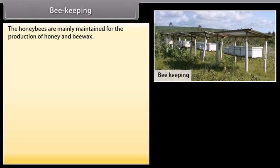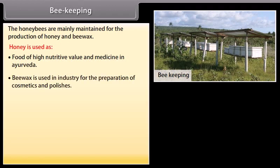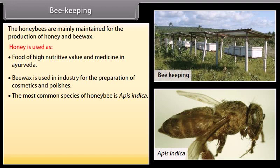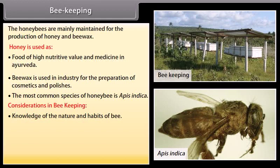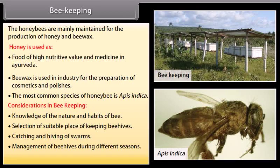Beekeeping: honeybees are mainly maintained for the production of honey and beeswax. Honey is used as a food of high nutritive value and medicine in Ayurveda. Beeswax is used in industry for the preparation of cosmetics and polishes. The most common species of honey bee is Apis indica. Considerations in beekeeping include: knowledge of the nature and habits of bees, selection of a suitable place for keeping beehives, catching and hiving of swarms, management of beehives during different seasons, and handling and collection of honey and beeswax.